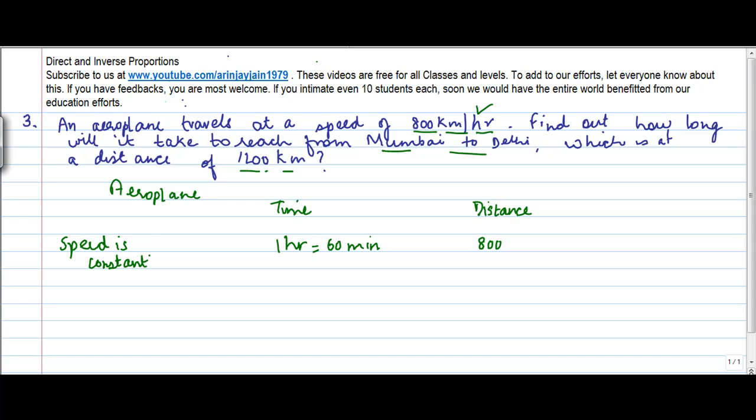Because if it is not constant, this 800 kilometers is not constant, then if suppose the speed drops to 600 kilometers an hour, then obviously the time that it takes will change.